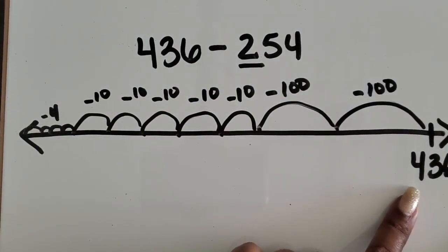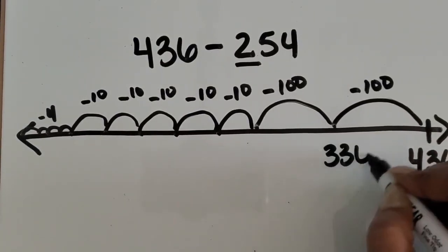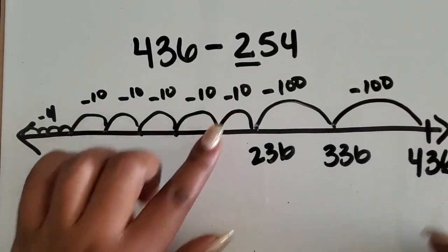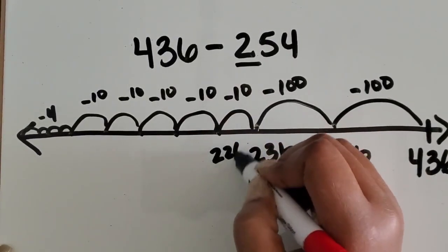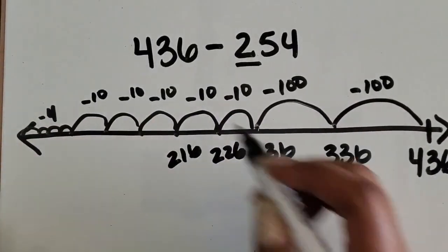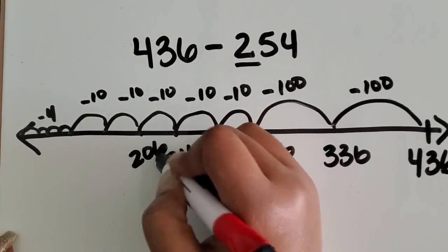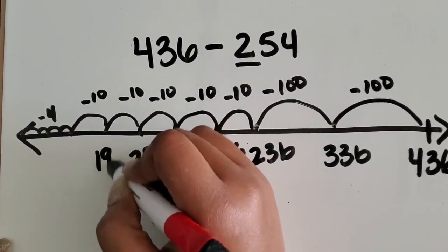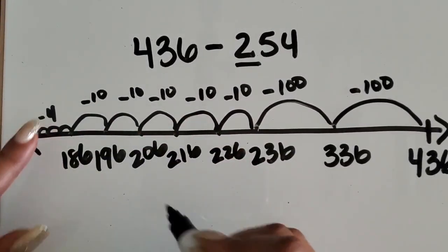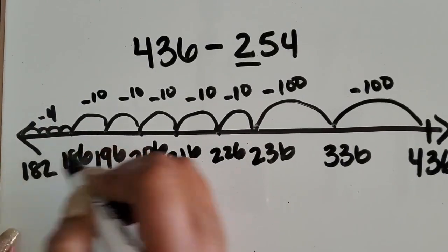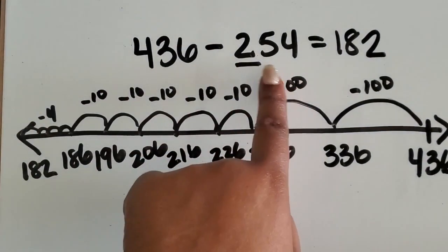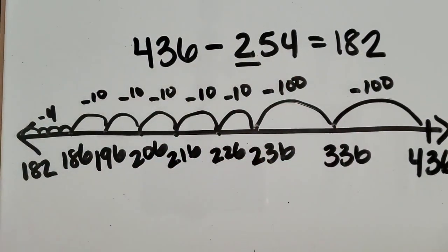Four hundred thirty-six minus one hundred is three hundred thirty-six. Minus one hundred is two hundred thirty-six. Minus ten is two hundred twenty-six. Minus ten is two hundred sixteen. Minus ten is two hundred six. Minus ten is one hundred ninety-six. Minus ten is one hundred eighty-six. Minus four gives us one hundred eighty-two. The difference between four hundred thirty-six and two hundred fifty-four is one hundred eighty-two.